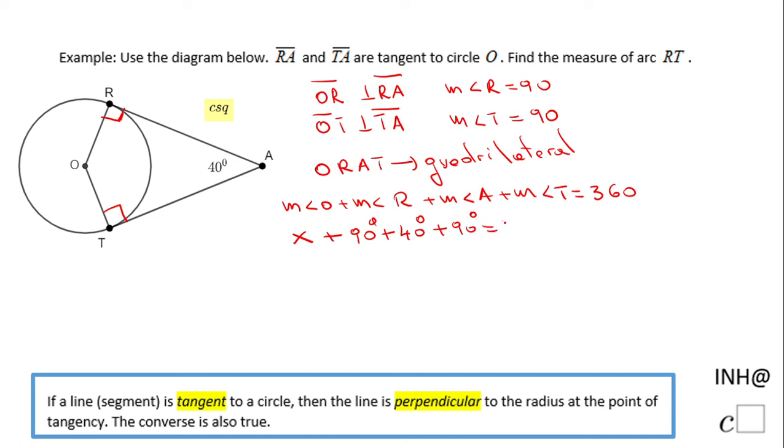That equals 360. We combine the three numbers: 90 plus 90 plus 40 is 180 plus 40, which is 220 degrees. Subtract 220 from 360 and we get x equals 140 degrees.